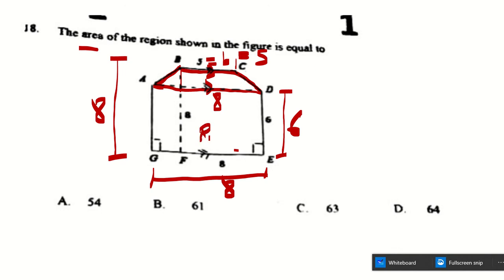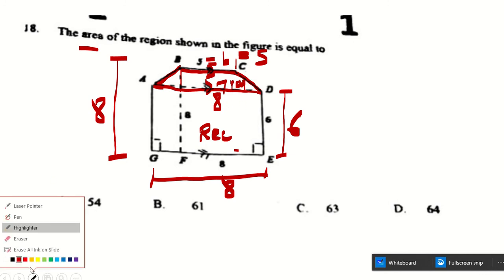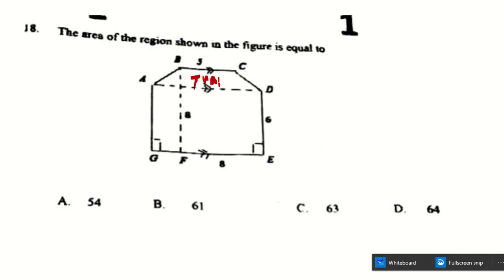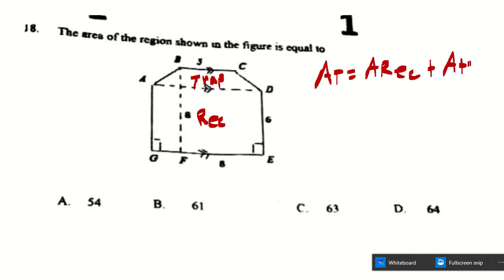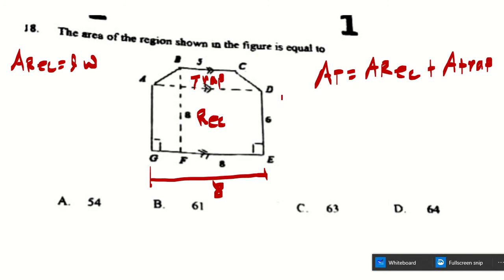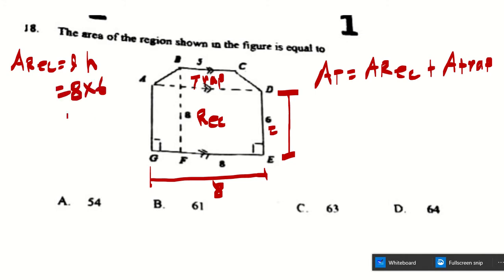So the total area equals area of rectangle plus area of trapezium. The area of the rectangle is length times height: 8 times 6 equals 48.